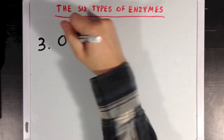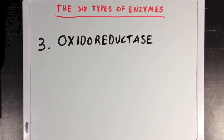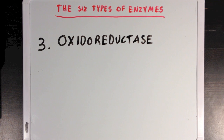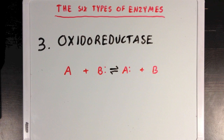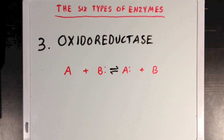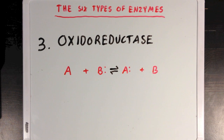Our third group is the oxidoreductase group, which is a little different from the others since it actually includes two different types of reactions. These reactions involve transferring electrons from either molecule B to molecule A, or from molecule A to molecule B. An oxidase is directly involved in oxidizing, or taking electrons away from a molecule, while a reductase is involved in reducing, or giving electrons to a molecule. These enzymes are called oxidoreductases together because they can usually catalyze both the forward and reverse reactions.